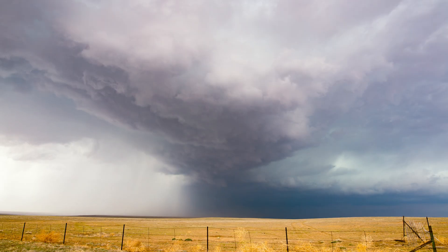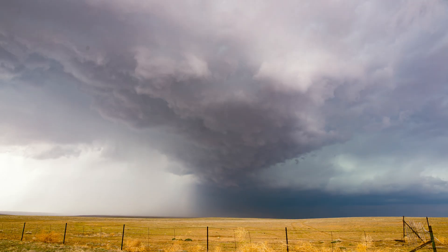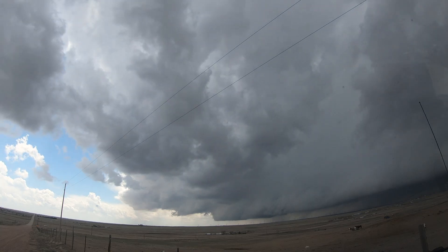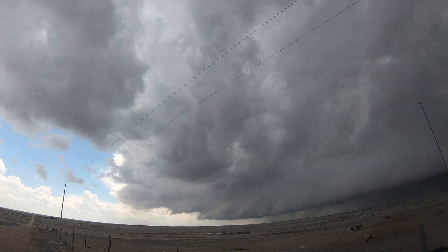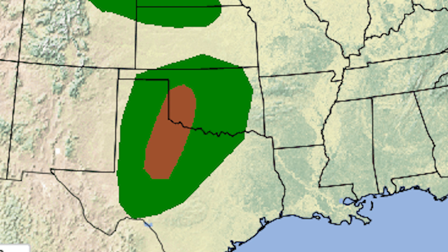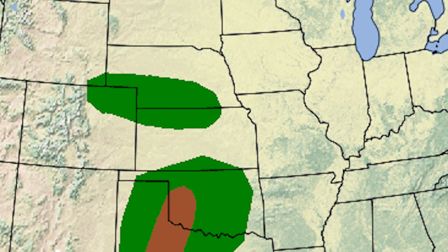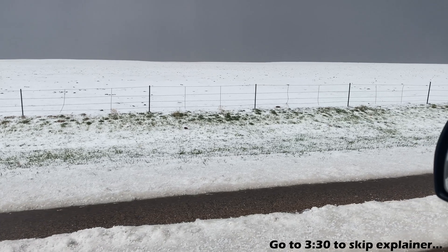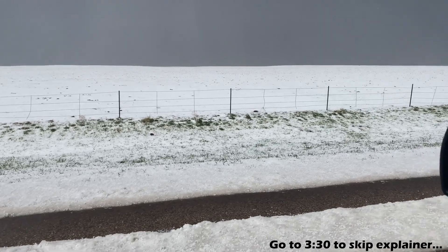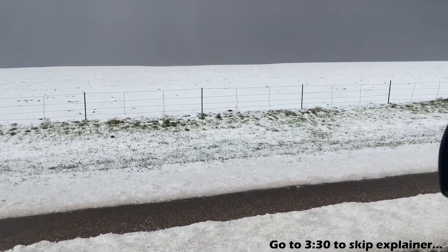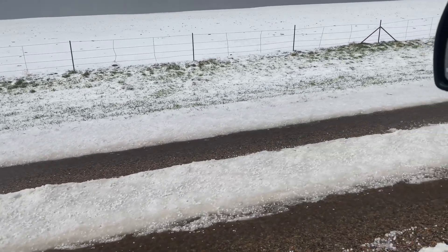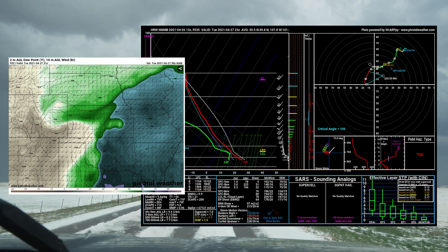Ahead of April 27, 2021, severe weather was forecast to pop off in central Texas. But there was a curious secondary region up in Colorado and Kansas, where essentially a cold front might pull some moisture into an environment with winds that changed significantly with height.